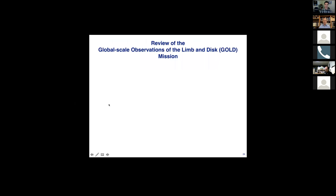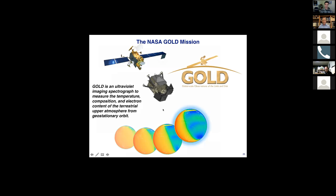So what are we going to do with GOLD to try to understand all this? I'm just going to give a quick review here. GOLD is global scale observations of the limb and disk. It's a spectrograph, an ultraviolet imaging spectrograph, which means that it makes an image with one dimension being an imaging dimension, the other being a spectrum of light. From that, we hope to be able to infer temperature and composition and electron content. We're going to do it from geostationary orbit.